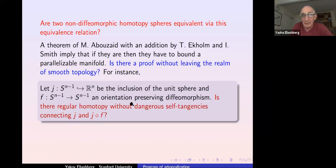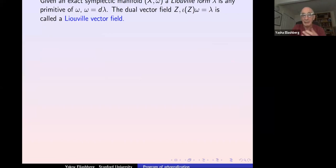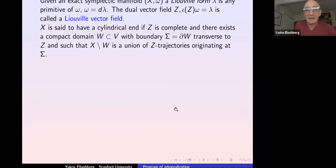A more special open question: take the inclusion of an (n−1)-sphere into ℝⁿ and reparametrize it by an orientation-preserving diffeomorphism. Are the original inclusion and this reparametrized map regularly homotopic without dangerous self-tangencies? It immediately follows from Smale's theorem that they are regularly homotopic, but the question is whether this can be done without dangerous self-tangencies.